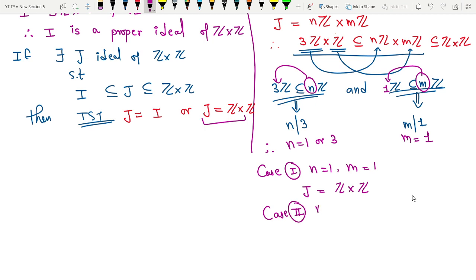Case 2. If my n is 3 and m is 1, then my J is same as 3Z×Z which is same as actually I. So what I found is if there exists any such ideal, either it is equal to I or it is equal to Z×Z.